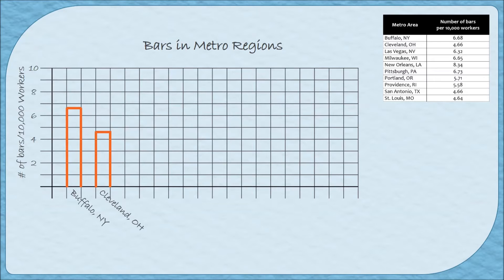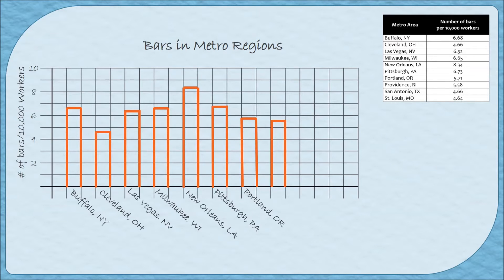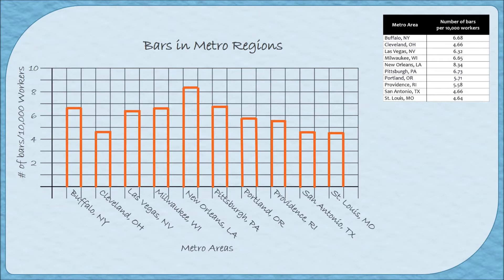Let's finish drawing the bars for our bar graph. Once we're done drawing the bars, I can label the horizontal axis with 'Metro Area.' I like to leave this label till the end because some city names are quite long and I'm not sure how far down they'll go — I don't want them to interfere with the axis title. Just make sure you don't forget to label it. With bars at approximate heights, axes labeled, spaces between bars, and a title, this is the minimum requirement for a bar graph.